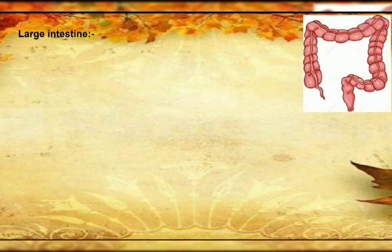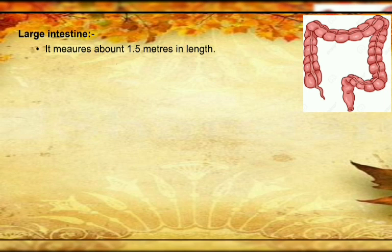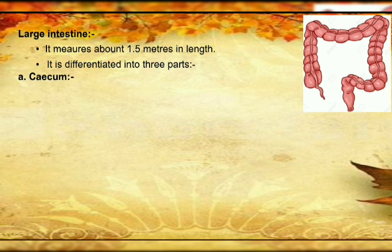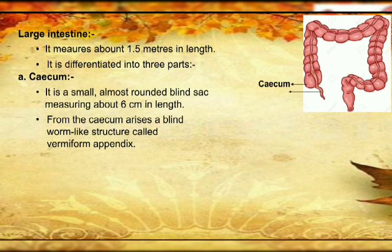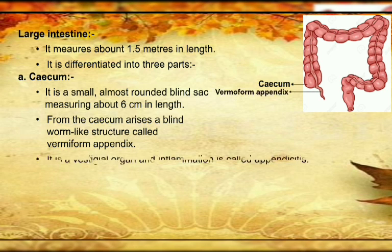The large intestine is about 1.5 meters in length, differentiated into three parts. Number one is the caecum — the swollen part. At the tip of the caecum, a thread-like structure is present called the appendix or vermiform appendix. Any inflammation or disease there is called appendicitis. It is about 6 cm in length.